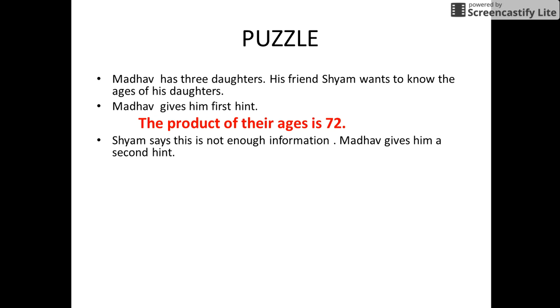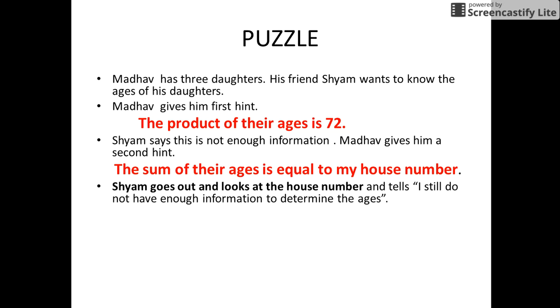So Madhav gives him a second hint that the sum of their ages is equal to his house number. Shyam has a look at the house number and still is unable to guess the ages of the daughters of Madhav.